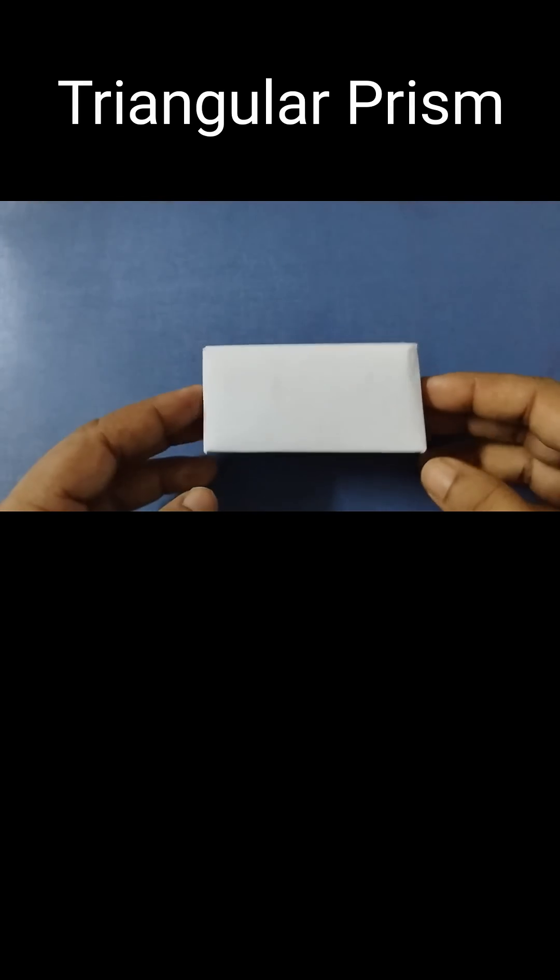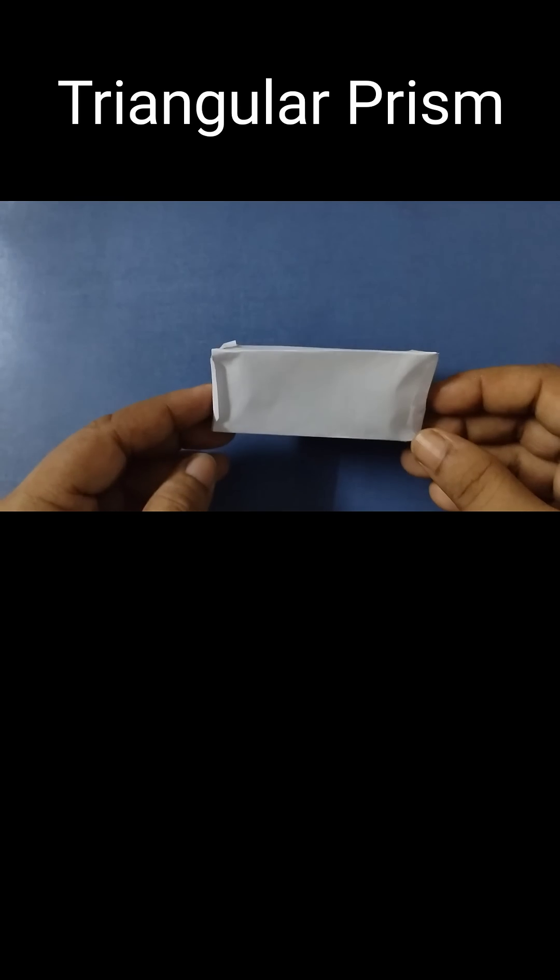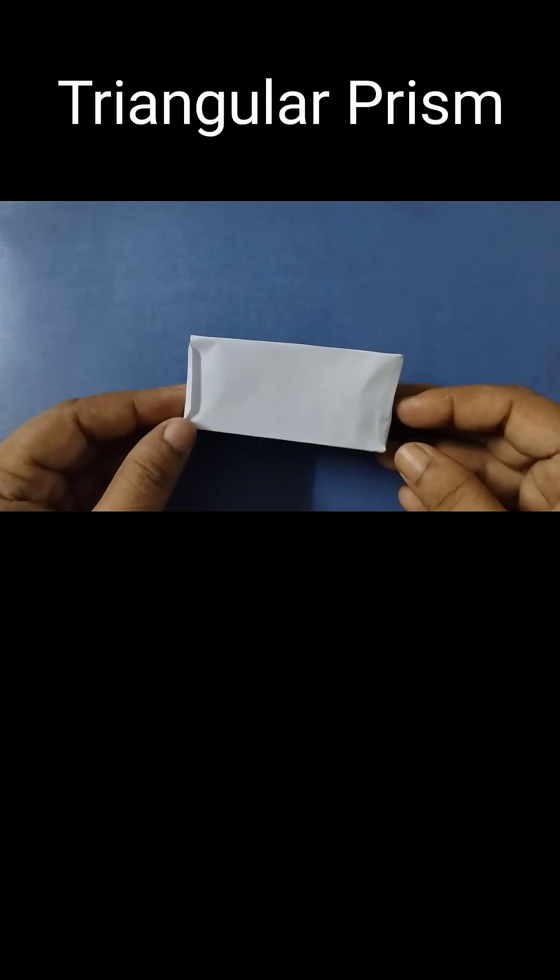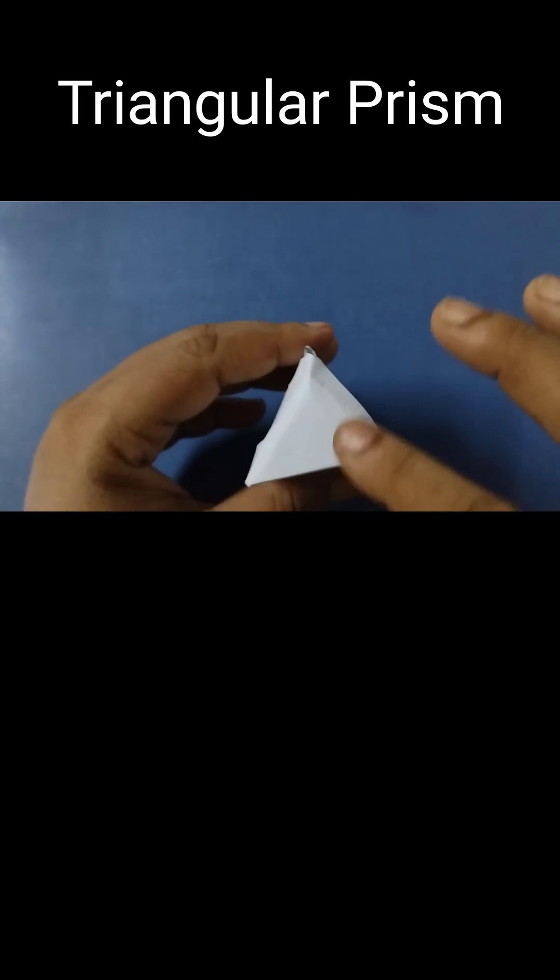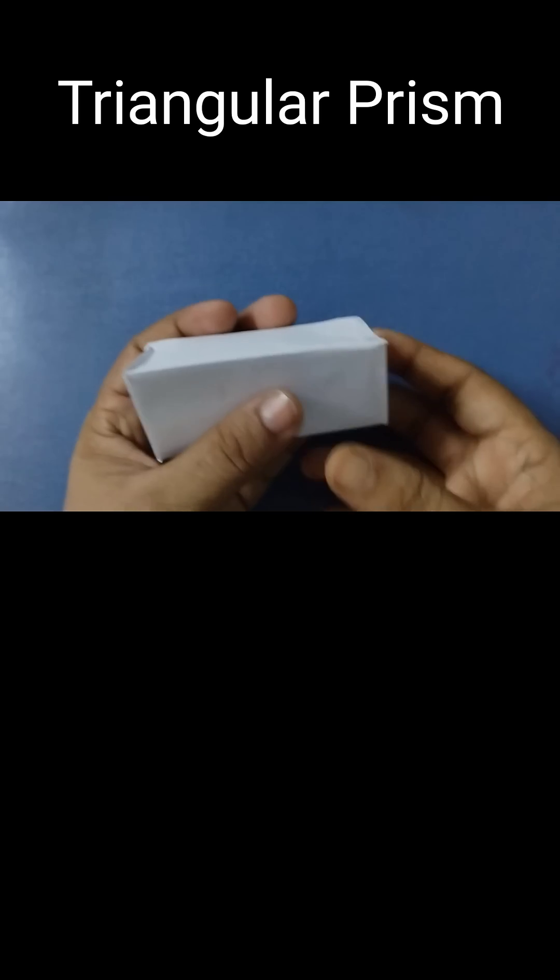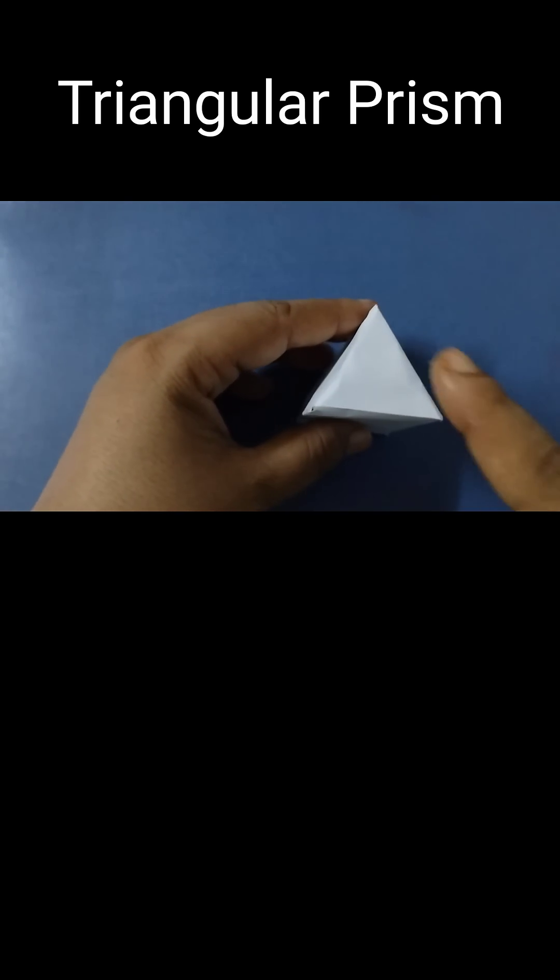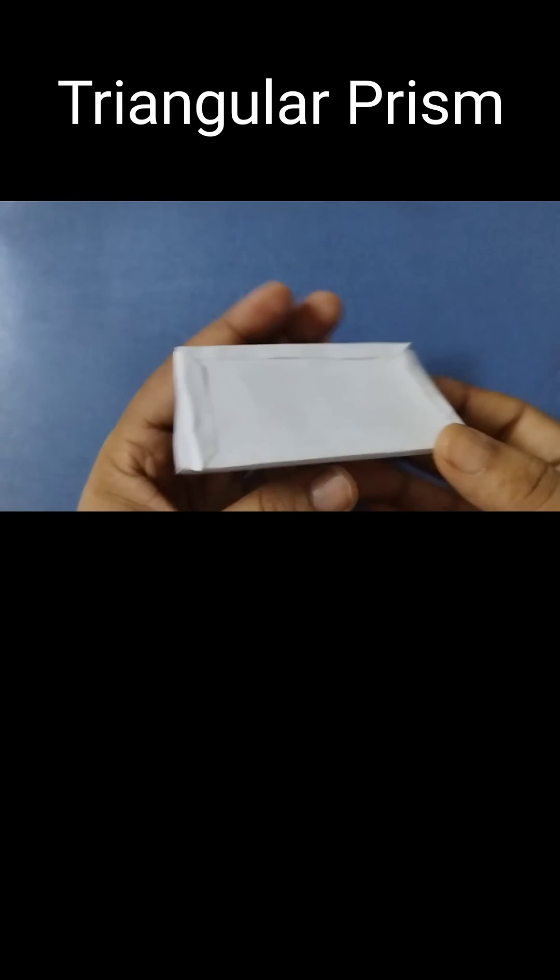Now look at this, our triangular prism is ready. Why is this called a triangular prism? Because we have a triangle here, you see, there's a triangle here and here we also have a triangle. So this is called a triangular prism.